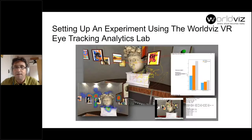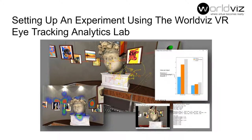Seda here — I'm going to walk you through how to set up your own eye tracking experiment using the WorldViz VR Eye Tracking Analytics Lab. The code we sent out to download is a scaled-down version that just collects fixation data. The full code here allows you to collect number of fixations, average total fixation time, pupil diameter size, timestamps, visualize the gaze intersect, the 3D gaze path, and heat maps.